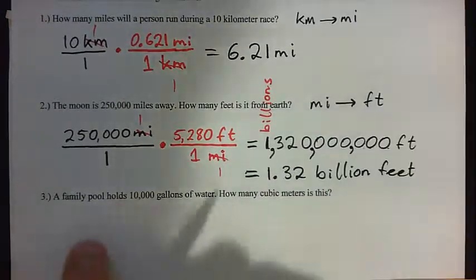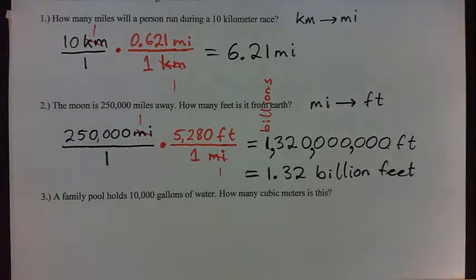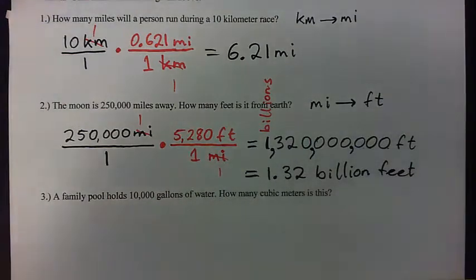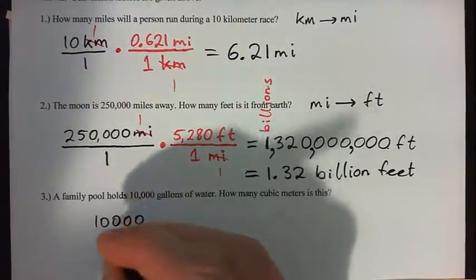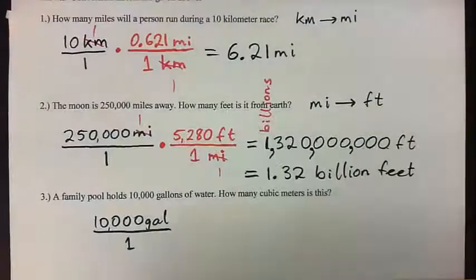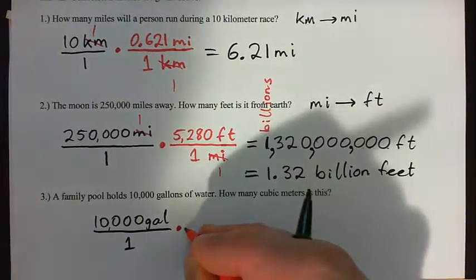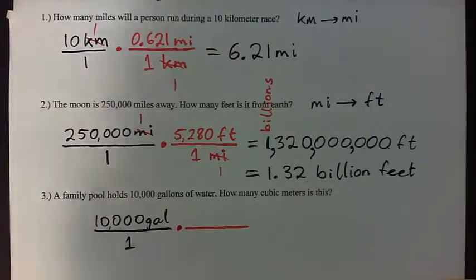Question three: a family pool holds 10,000 gallons of water — how many cubic meters is this? Please do the first step: write down what we have as a fraction over 1. I hope you got 10,000 gallons — GAL — over 1. Now the next step is to multiply by an appropriate unit fraction.